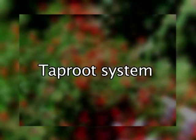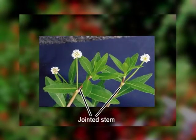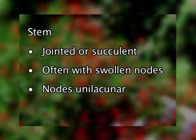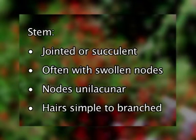Now let us discuss its root. As it is a dicot, in the majority of the taxa we see a tap root system. The stem is usually jointed or can be succulent, often associated with swollen nodes. The nodes are unilacunar and the stems are hairy. These hairs can be simple to branched.